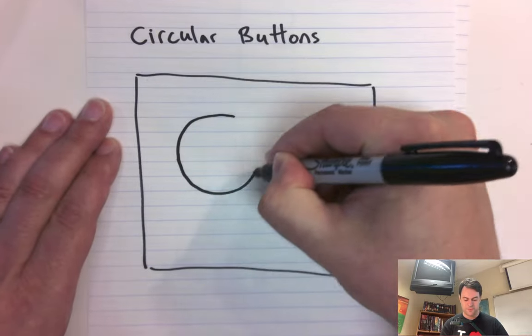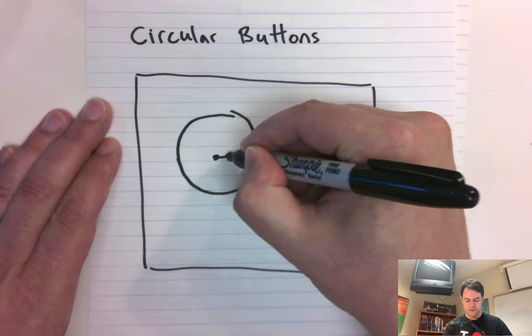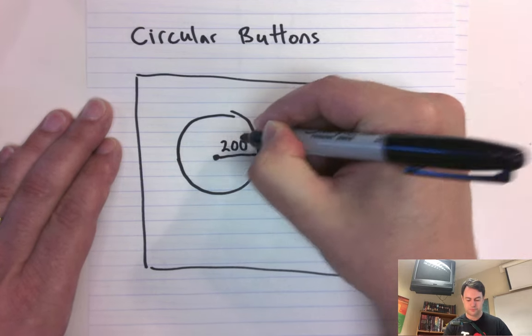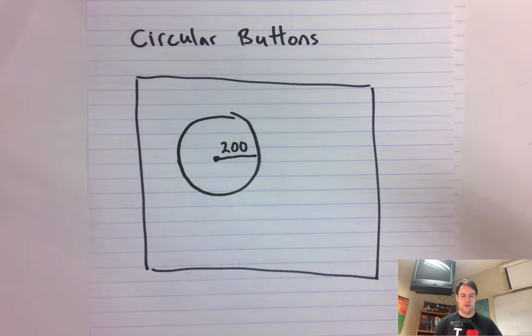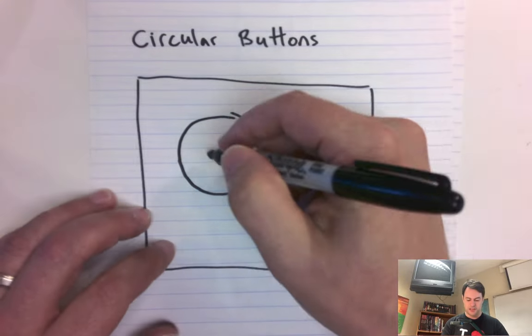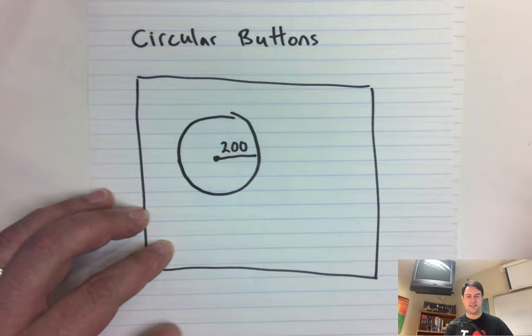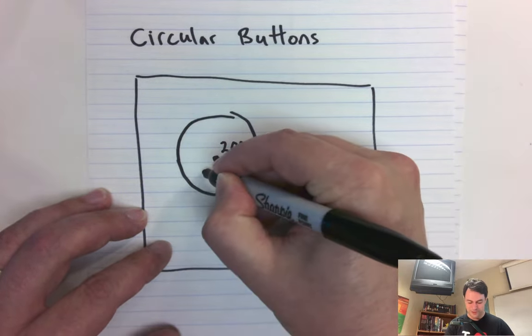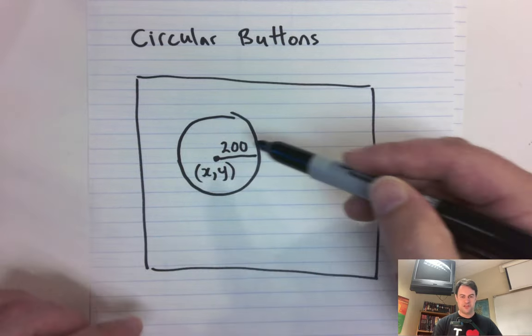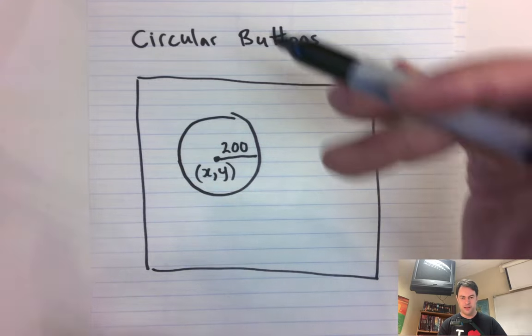So here's a circle, and let's say it has a radius of 200. And we want to make that clickable, and let's say its position is x and y. Very exciting variable. So this is x, y is the center of that circle, and its radius is 200. So all around is 200. It's 400 wide and 400 tall.